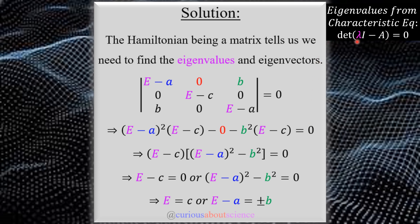Sometimes books switch this so we have the matrix minus the eigenvalue times the identity — it doesn't really matter, you can factor out negatives and it becomes the same thing. Here the eigenvalue in purple is multiplied to the identity matrix, with ones on the main diagonal, to match the dimensions of the three-by-three Hamiltonian. When we do the subtraction we get E minus the entries on the main diagonal.